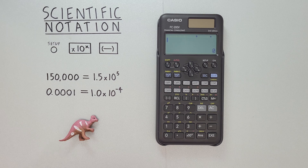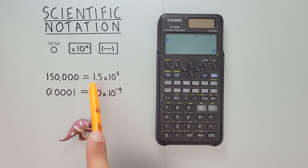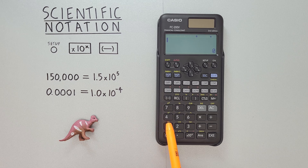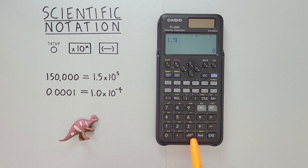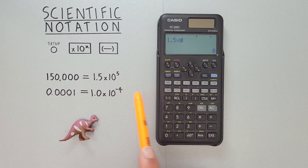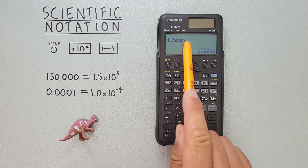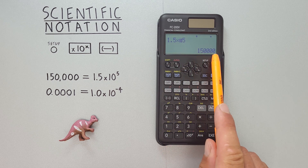What if we're given numbers in scientific notation and want to enter them in our calculator that way? For example, we're given 1.5 times 10 to the power of 5. Well, to do that, we can start by entering the 1.5, and then we use the times 10 to the x key down here. And now we enter the exponent, which here is 5, hit EXE, and we see 1.5 times 10 to the power of 5 is the same as 150,000.